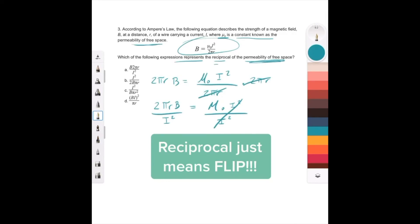Now, the only key thing is that it's asking for the reciprocal, so all that means is we have to flip it. So we're looking for the one that has i squared over 2 pi r b, or 2 b pi r.